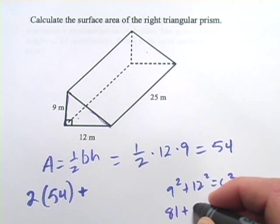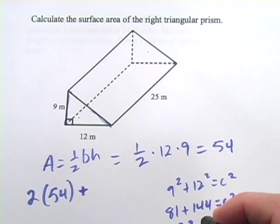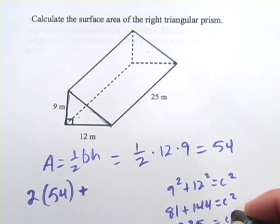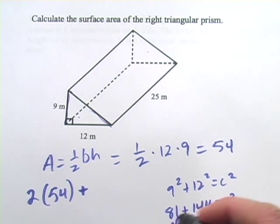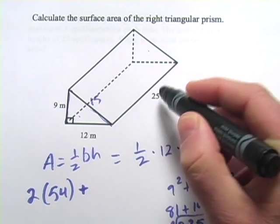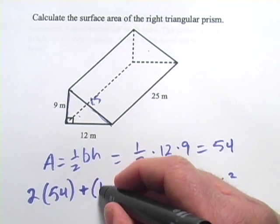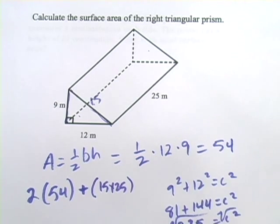So that's 81 plus 144 equals C squared. That's 225 equals C squared. You take the square root of both sides, and you get C equals 15. All right, so that surface is 25 by 15. Put that one in there.